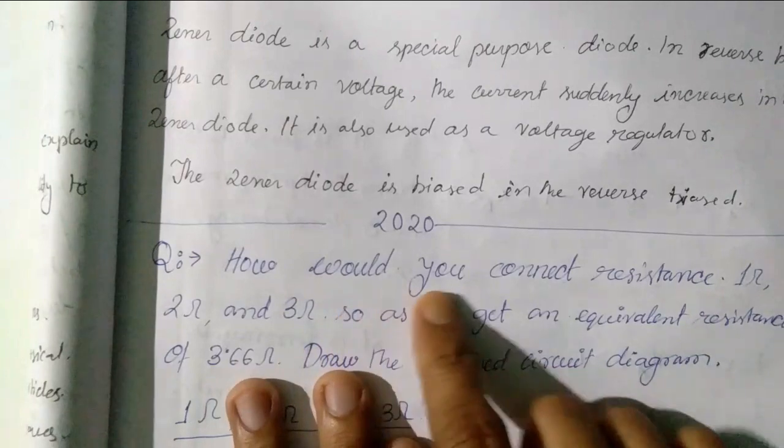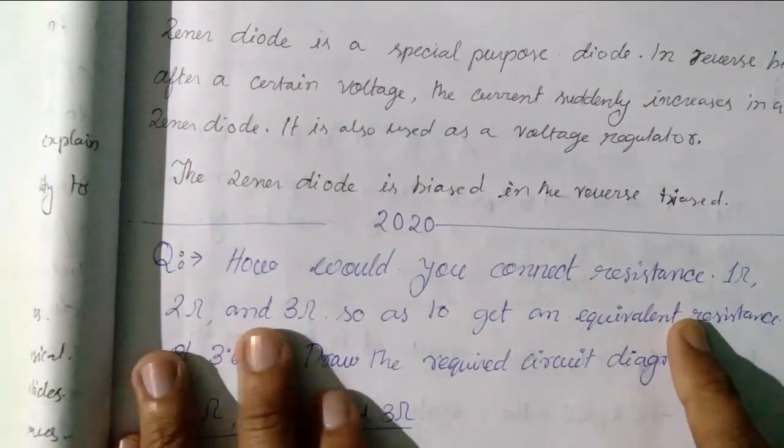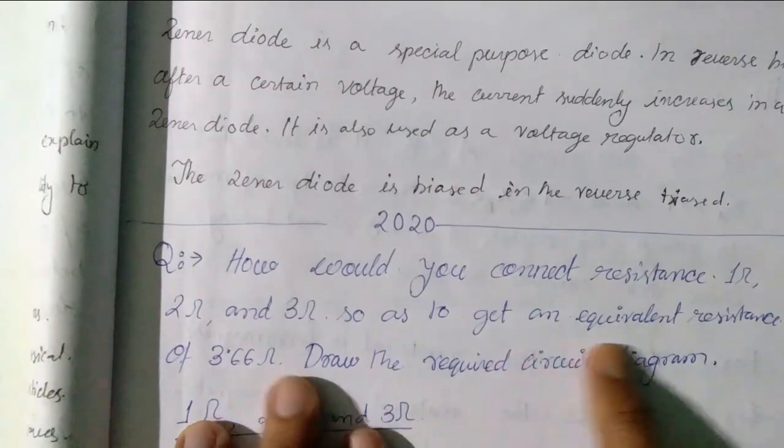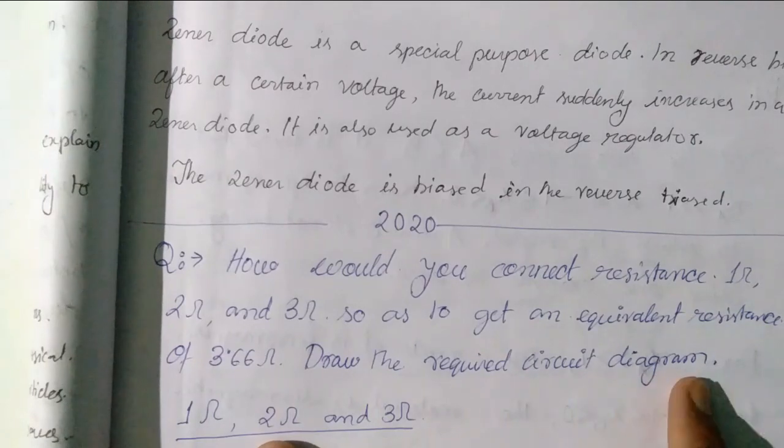The first question is how would you connect resistance 1 ohm, 2 ohm and 3 ohm so as to get an equivalent resistance of 3.66 ohm and draw the required circuit diagram.